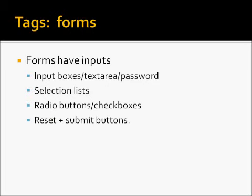Once you've created the form tag, inside you're going to place inputs. Inputs can come in the form of input boxes, text areas and passwords. These are all items that your users can type into, and usually it's free form typing. You can have selection lists, where your users can pick off of a list of items or things they want to select. You can have radio buttons and check boxes. Radio buttons are for single choice items, for example age. And check boxes, which are for multiple choice options, such as hobbies. You can finally submit the form using a submit button, or reset the form using a reset button.